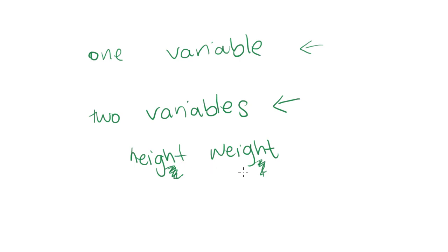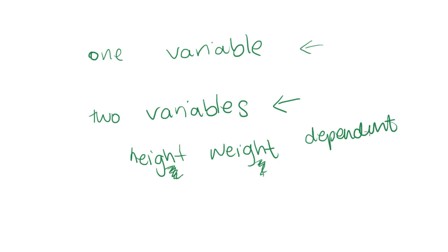When you have two variables, sometimes they won't have any effect on each other and they'll be completely unrelated. But if they do have a relationship, one of them is generally dependent upon the other. That one becomes the dependent variable, and the other one, which is free to do what it likes, we call the independent variable.